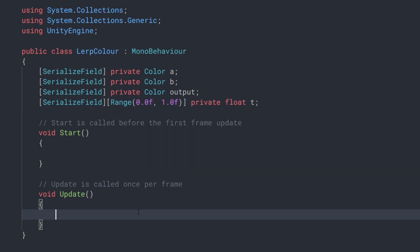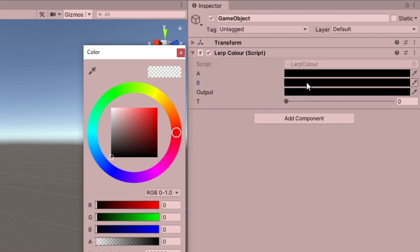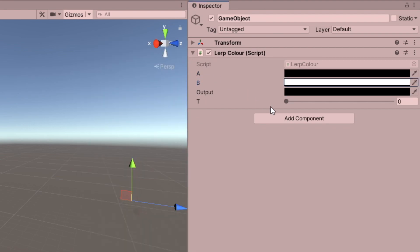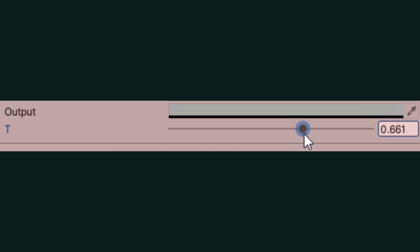Then in Update, we'll want to set the output colour to the result of our LERP, and we'll then pass in A, B and T respectively. And, as expected, in play mode, if we set A to black and B to white, and then change the percentage, we get as output different shades of grey, which is maybe what you'd expect.